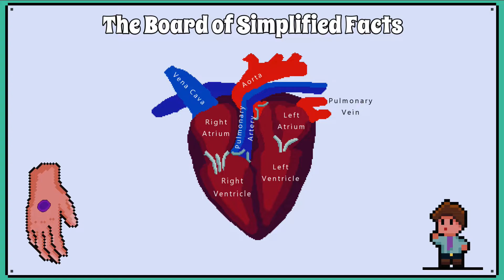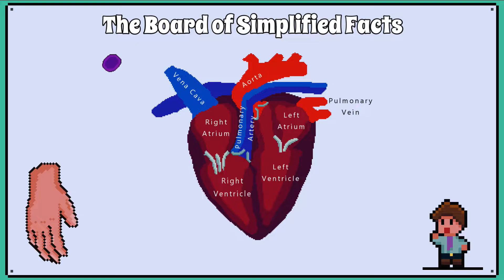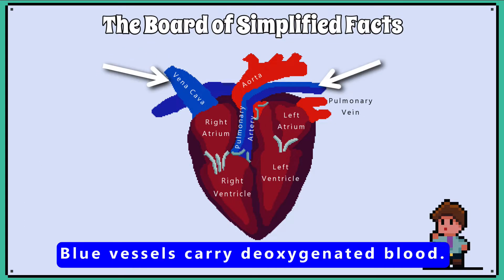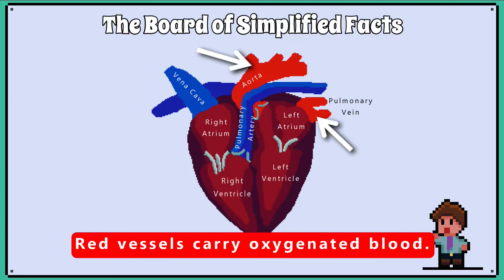Let us take a red blood cell that is deoxygenated and has just come from the tip of your finger and needs to get back to the lungs to pick up more oxygen. In this diagram, any vessels that are blue carry deoxygenated blood and any red vessels carry oxygenated blood.